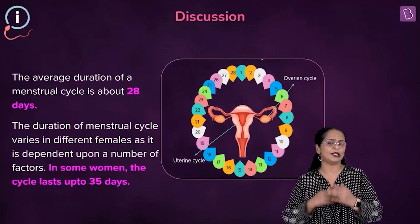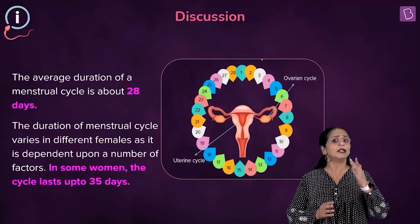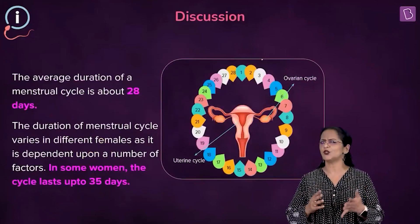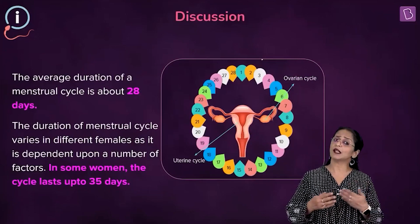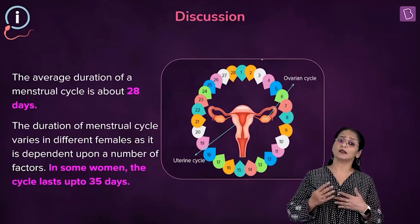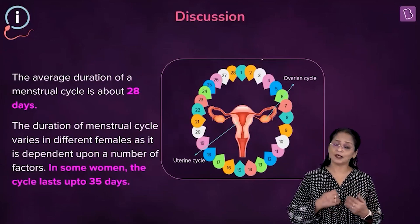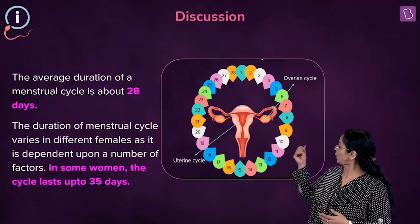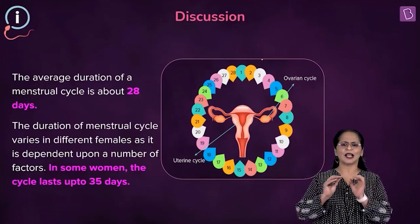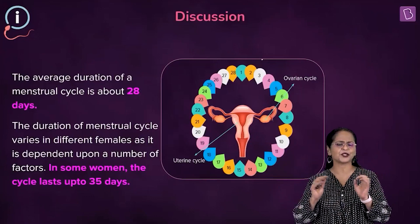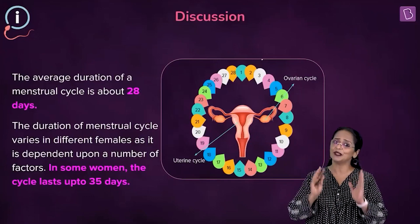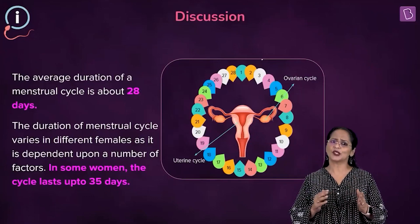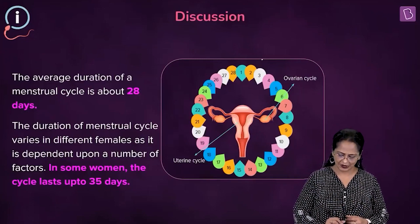This is the normal length, but it can vary from person to person due to various reasons. In fact, in some women it lasts as long as 35 days. What you see here is a diagrammatic depiction of a normal menstrual cycle, which lasts for about 28 days.